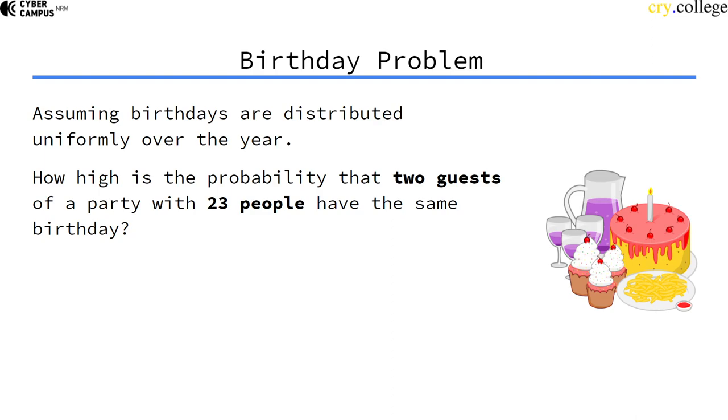Out of these 23 people, do any two guests have the same birthday somewhere in the year? Well, turns out this probability is actually around 50%, which is a lot higher than you would think intuitively. How come?